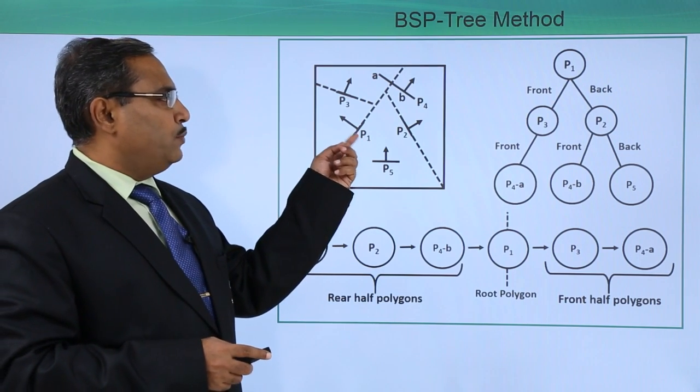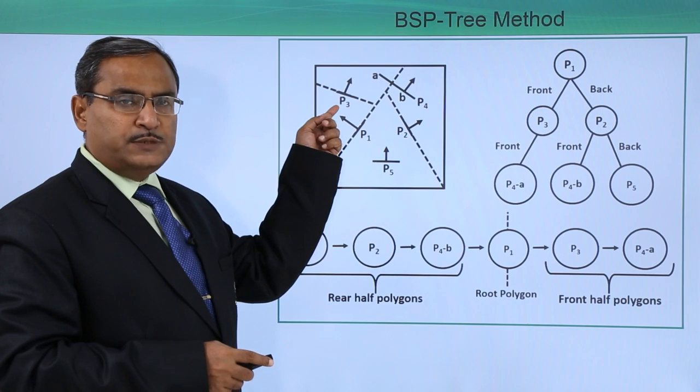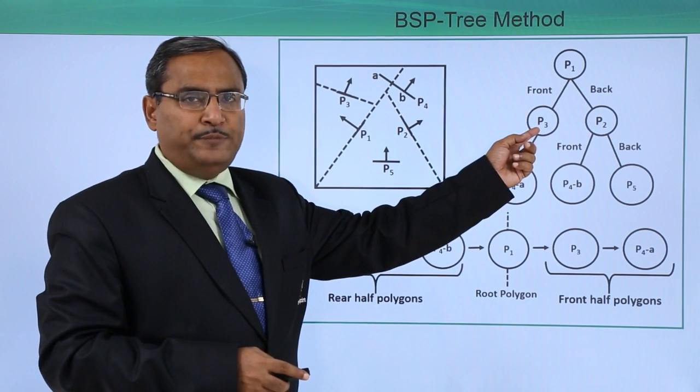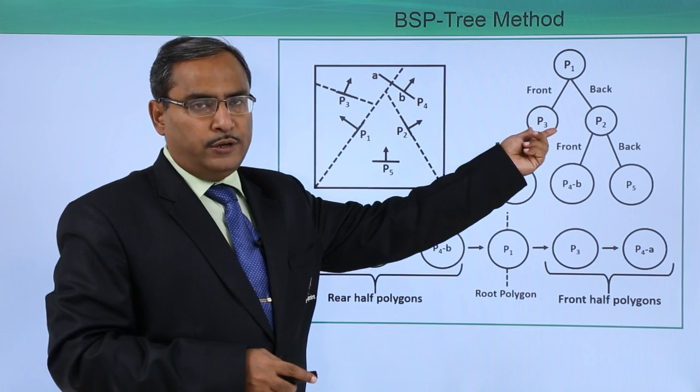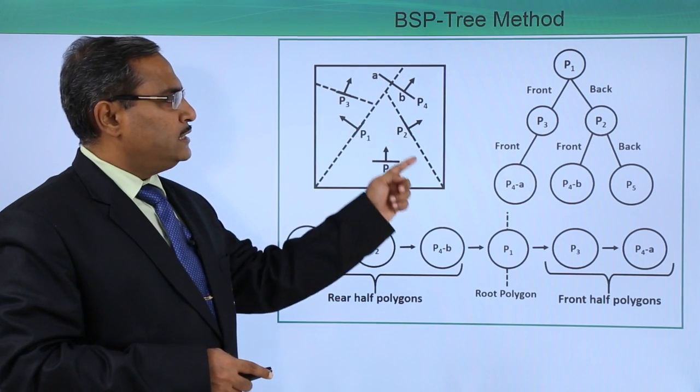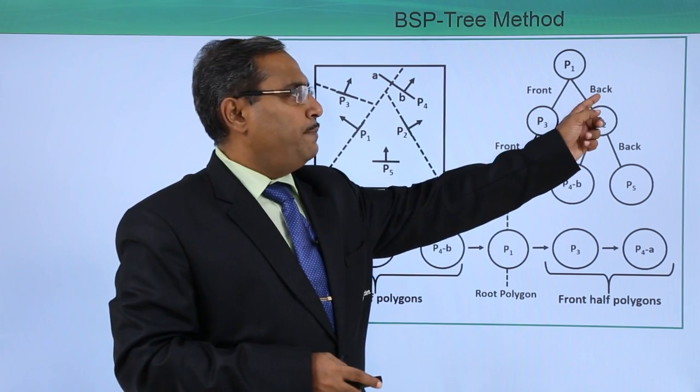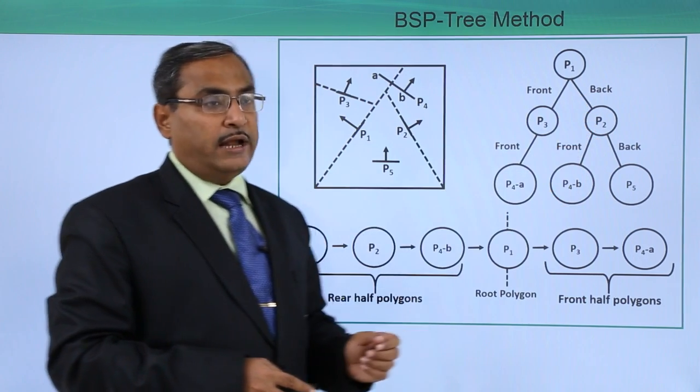If you consider P1, this normal has been drawn here. This polygon is in the front, so we are having this left child of P1. I have put the label front here. Now in the back we are getting P2. So I am writing P2 in the back of P1, that is why we have written this one as the right child.